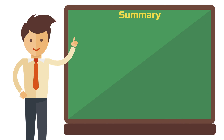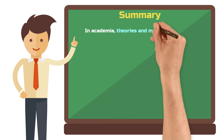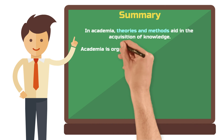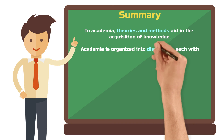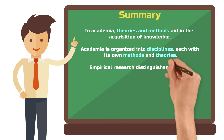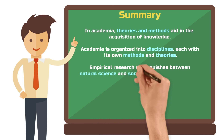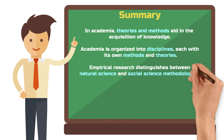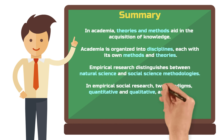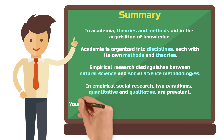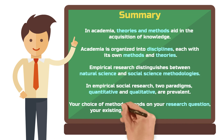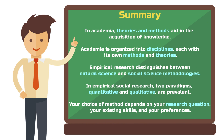In summary, in academia, theories and methods aid in the acquisition of knowledge. Academia is organized into disciplines, each with its own methods and theories. Your research can be empirical or non-empirical. Empirical research distinguishes between natural science research and social science methodologies. In empirical social research, two paradigms — quantitative and qualitative — are prevalent. Your choice of method depends on your research question, your existing skills and your preferences.